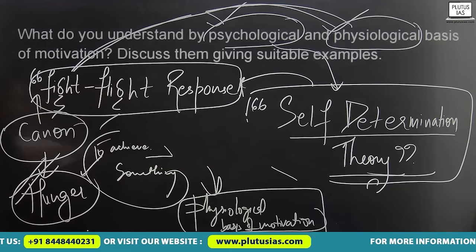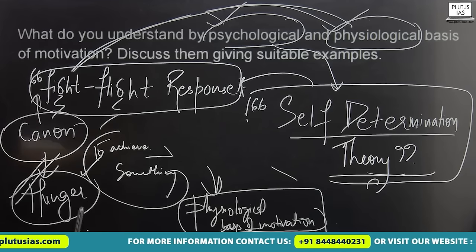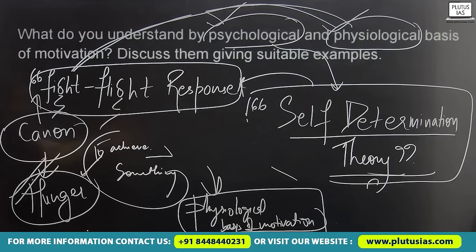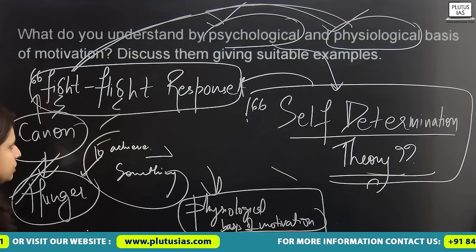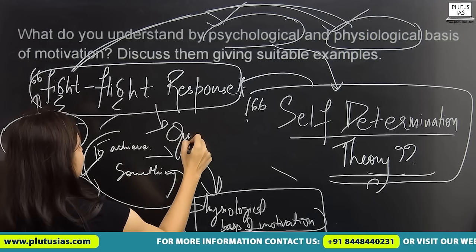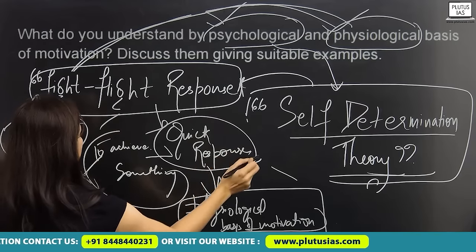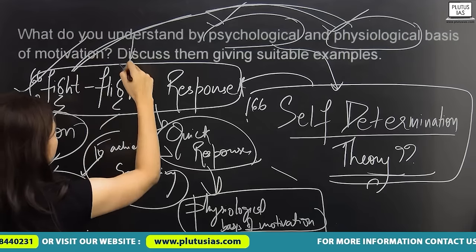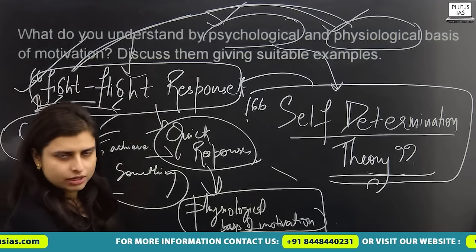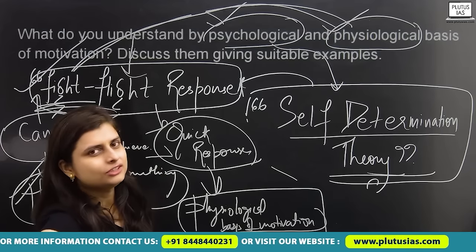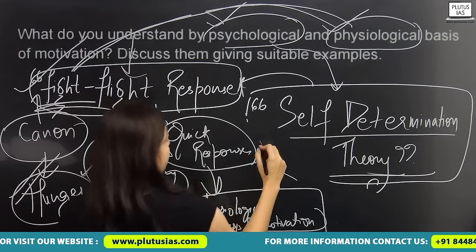You can also include the fight-or-flight response, also given by Cannon. This fight-or-flight response means there is a motivation or potential under the person to quickly respond to a situation — either you fight back or you run away. For example, if a bear is coming in front of you, you either run away or fight back. This quick response is one of the bases of motivation.